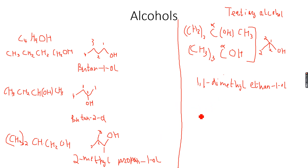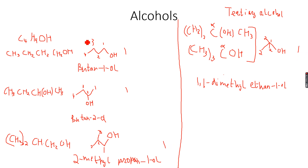So now you know the difference between the three types of alcohols. These are all the isomers possible for butanol, which is C4H9OH. Let's count the number of isomers: this is one, this is two, this is three, this is four. So there are four different structural isomers of butan-1-ol.